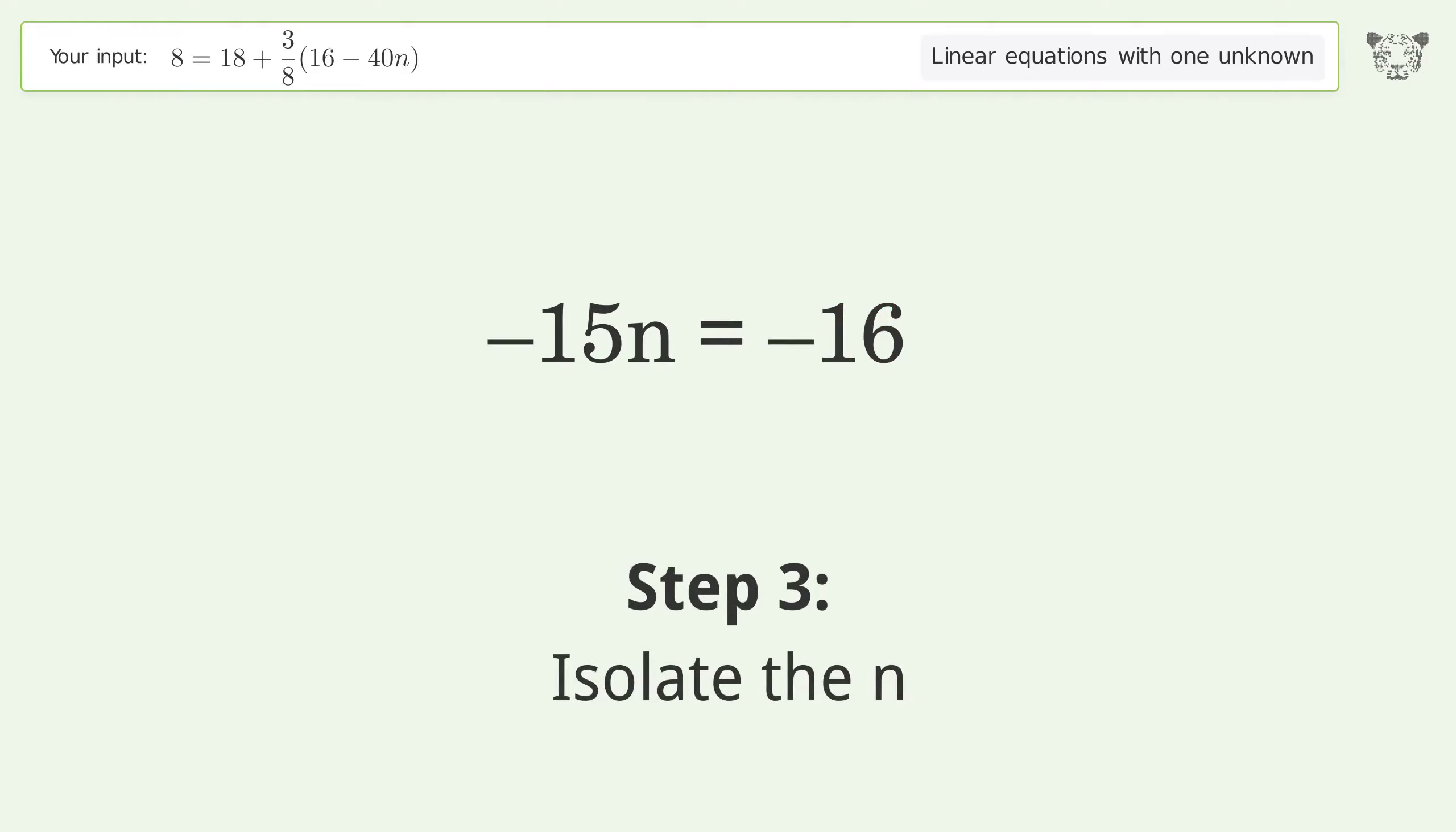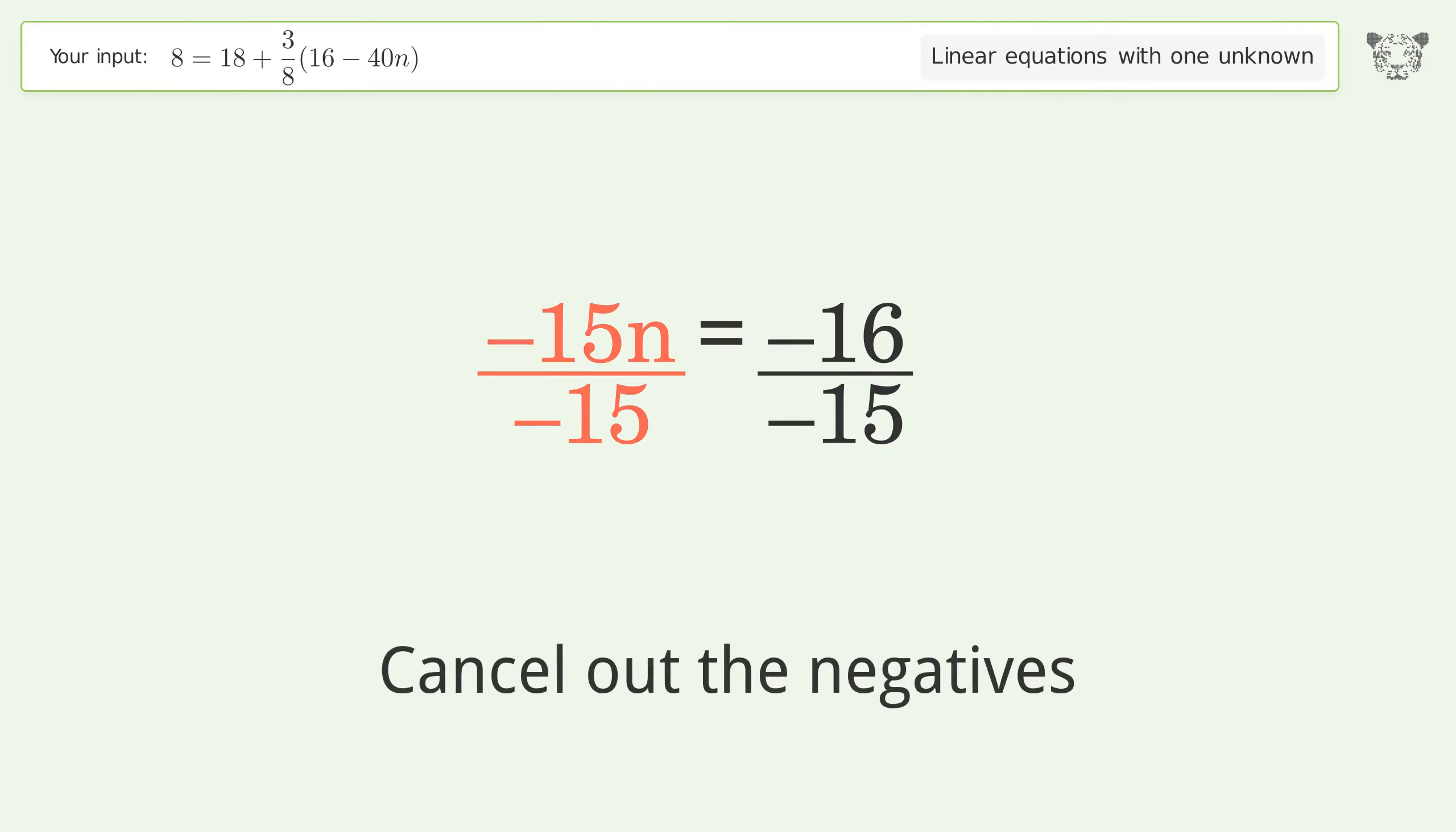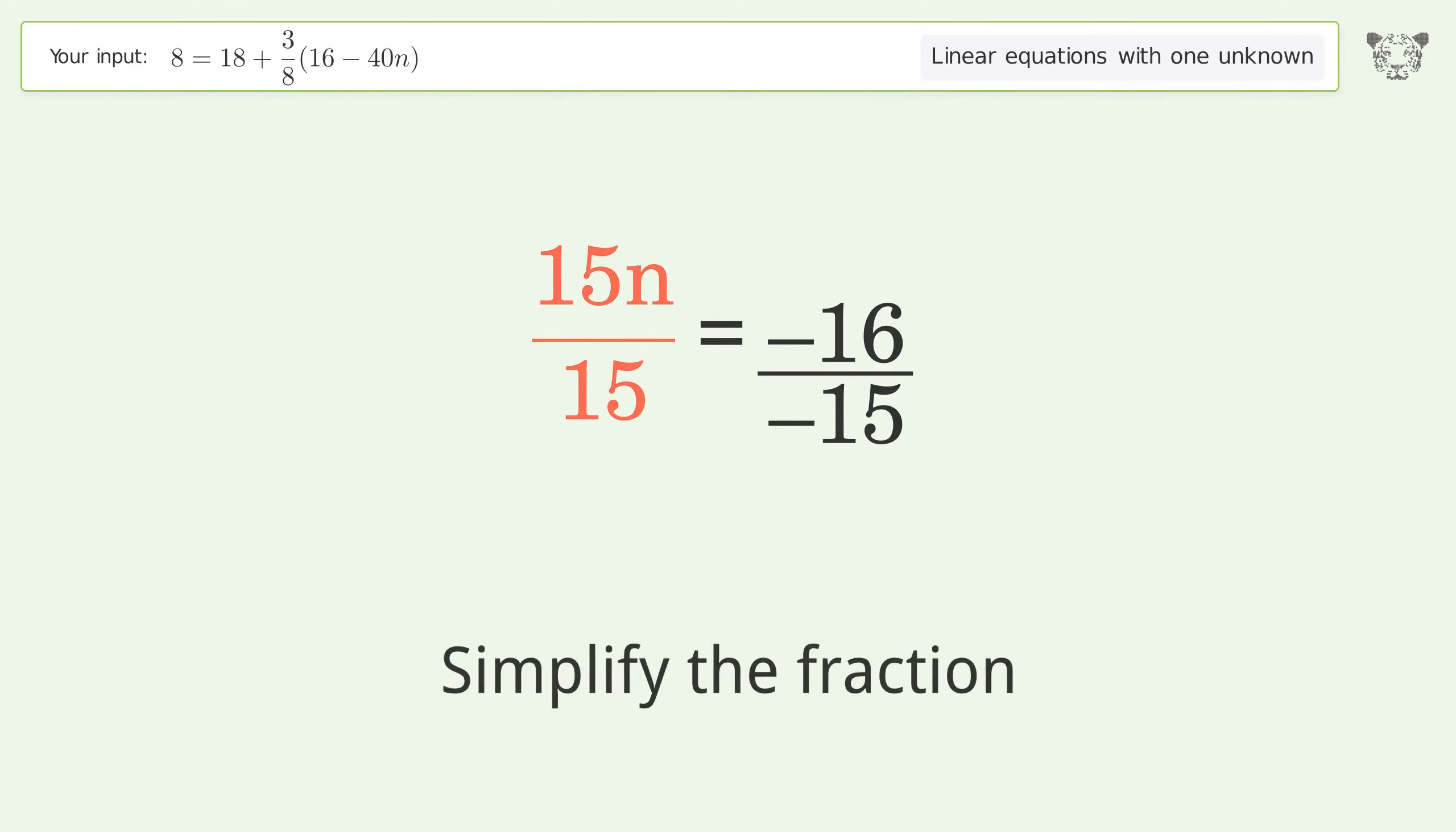Isolate the n. Divide both sides by negative 15. Cancel out the negatives. Simplify the fraction. Cancel out the negatives.